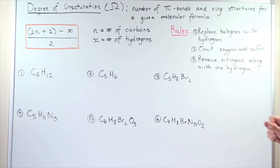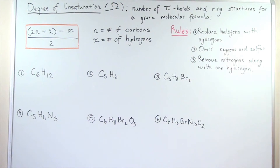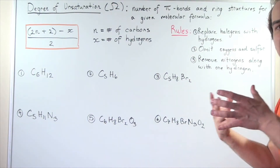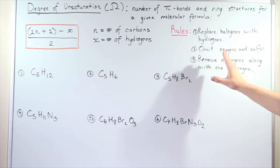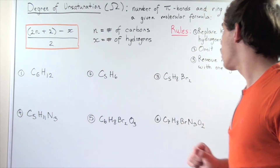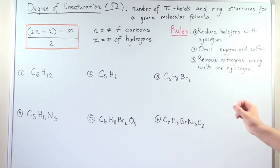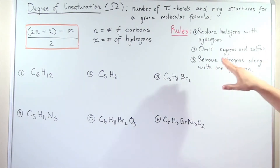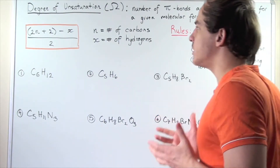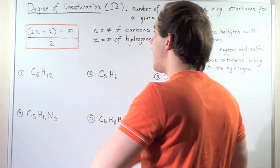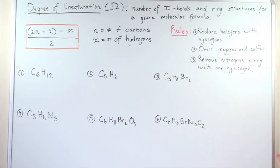Rule number one: replace all halogens with hydrogens. Rule number two: whenever you have a molecule with oxygens or sulfur, omit the oxygens and sulfur in your formula. Rule number three: remove nitrogens along with one hydrogen per nitrogen atom. Let's look at how we can use this formula and these three rules.